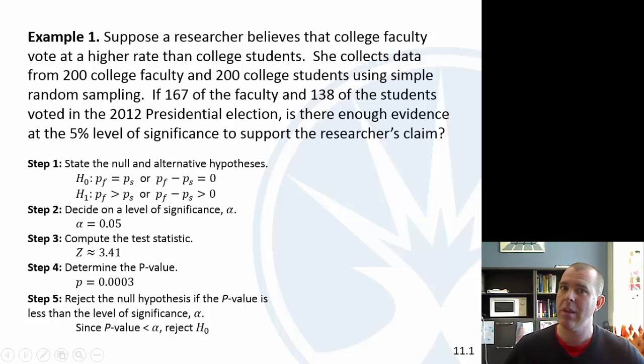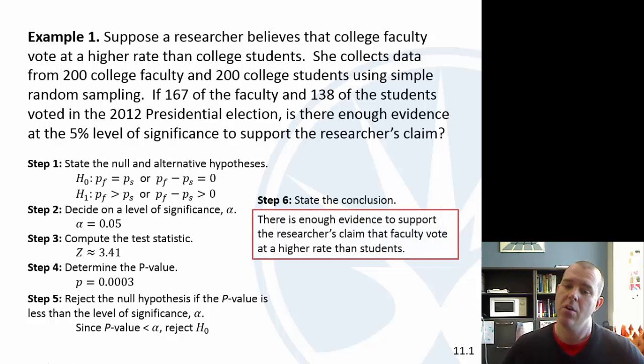We observed something really unusual. It was 3 out of 10,000. Three out of 10,000 times you could get a difference this large just randomly. So that difference is probably not random. So our conclusion: there is enough evidence to support that claim that faculty vote at a higher rate. That's a test for the difference in a proportion.